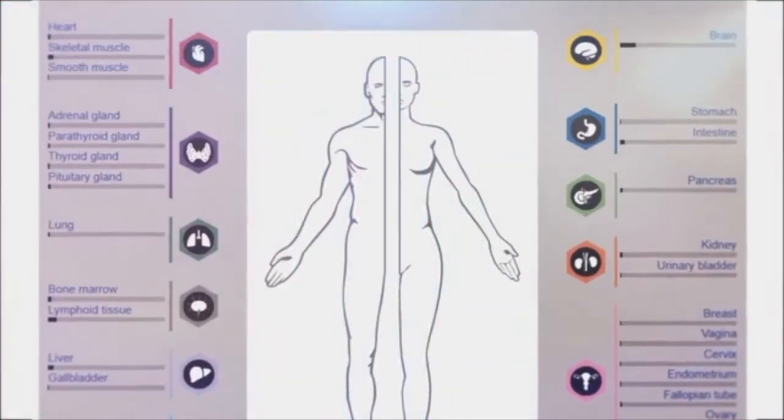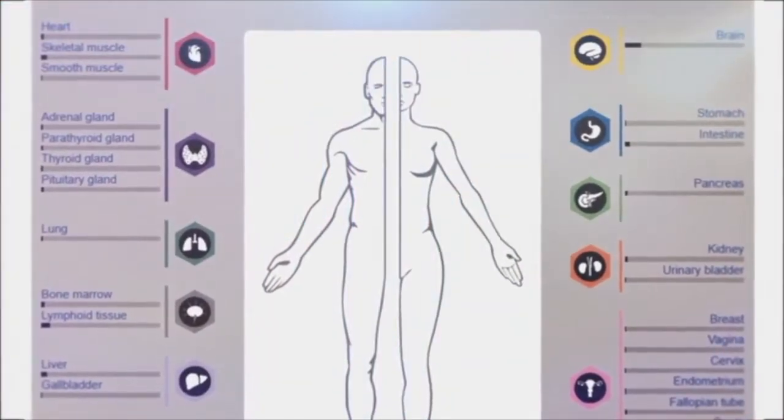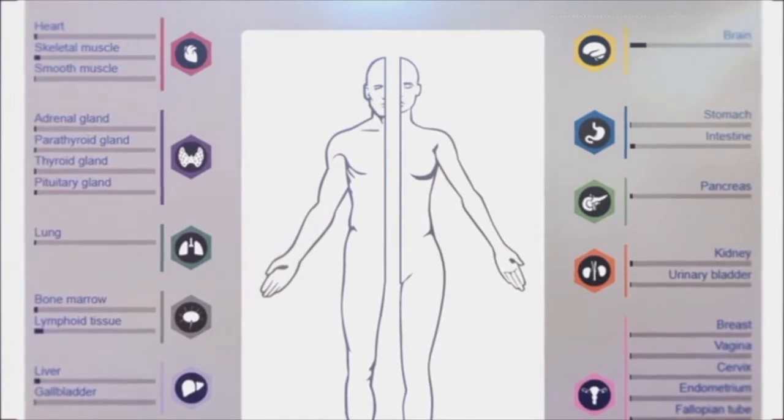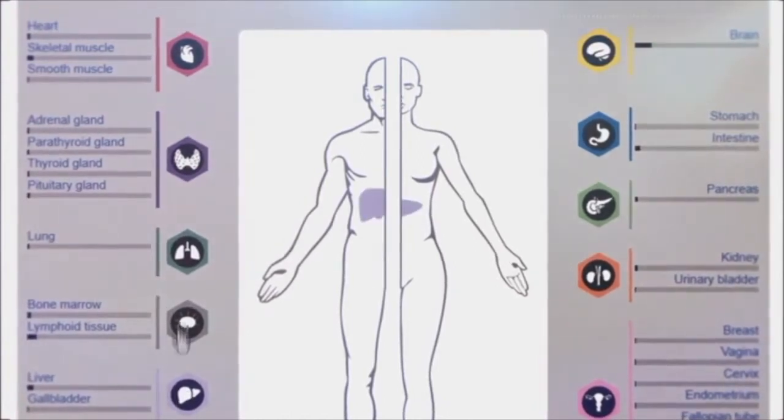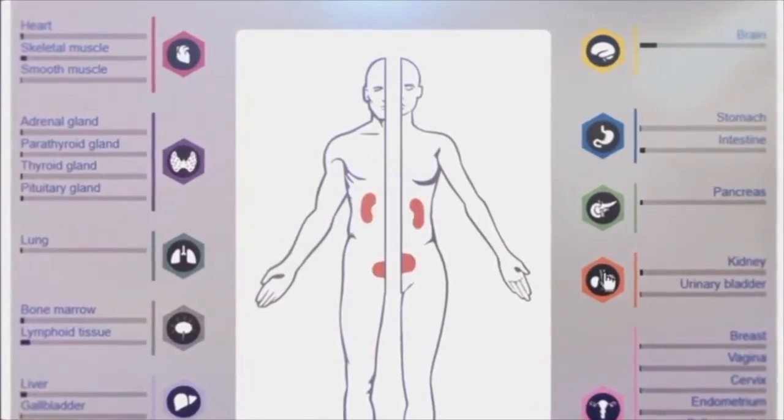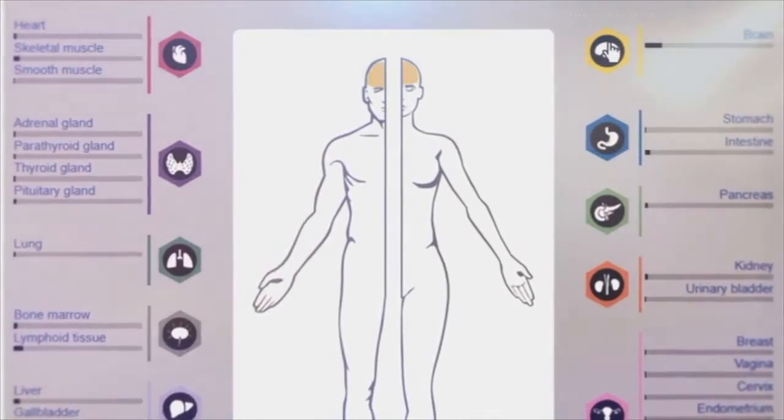The Tissue Atlas contains information about the location of proteins in all major organs in the body, such as the liver, heart, kidney, pancreas, and the brain.